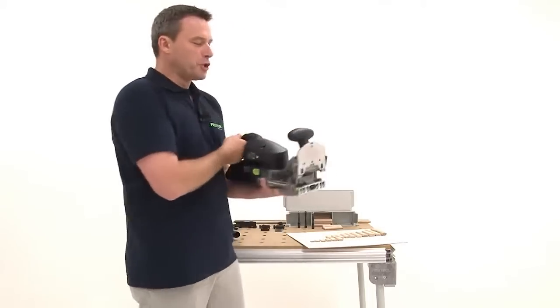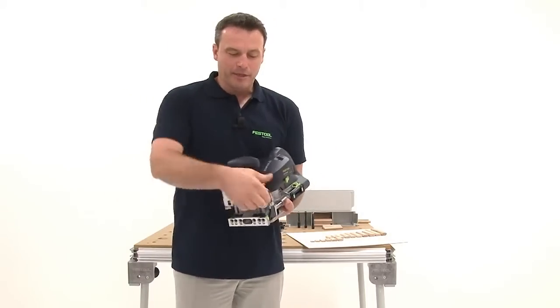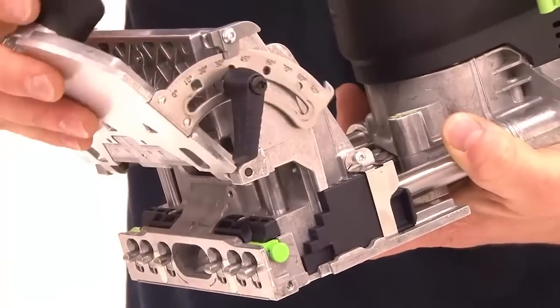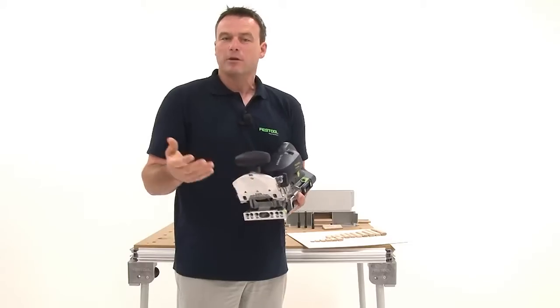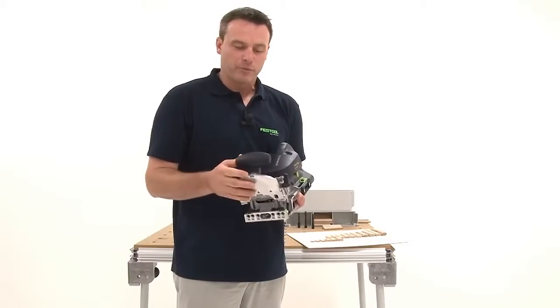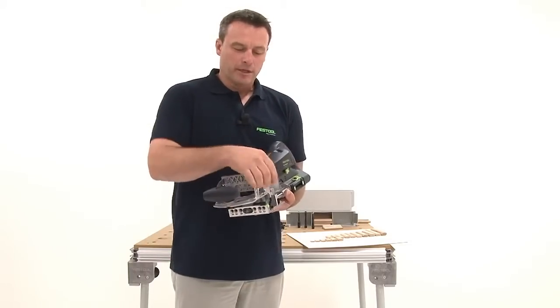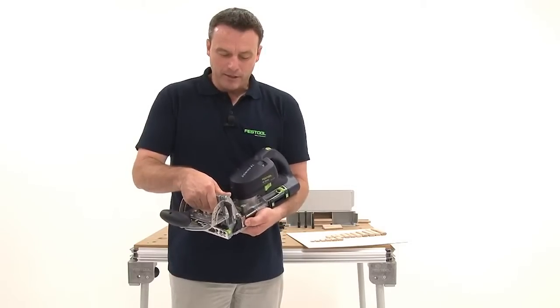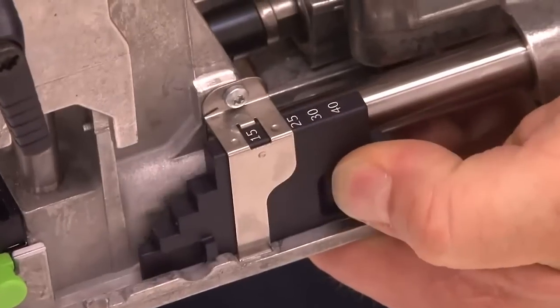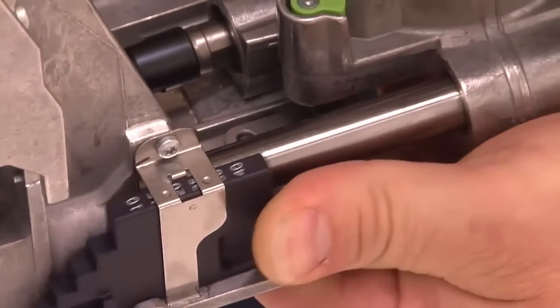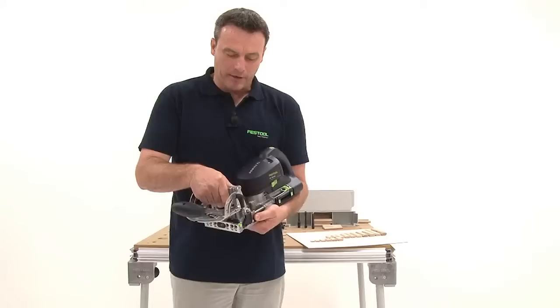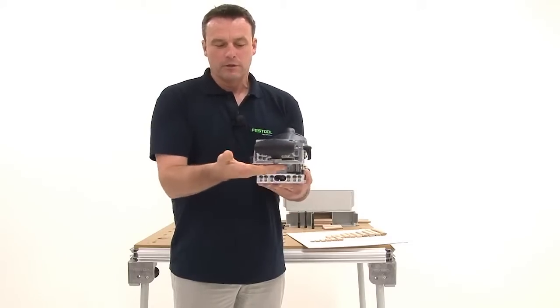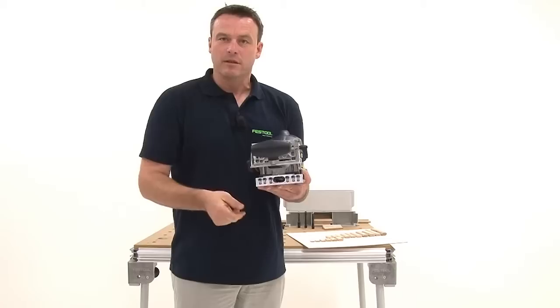This machine has of course different options for settings. I have here a table panel which I can fold out, not just to 90 degrees, but to 45 degrees as well. This also enables me to make miter joints. It's fantastic that I can set a recurring measurement with this level stop. It works from 10 mm to 40 mm, so when I set it here to 40, the distance from the table surface to the center miller is 40 mm.